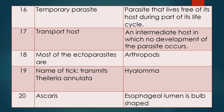Question nineteen: Name the tick which transmits Theileria annulata. Very common question. The answer is Hyalomma. Question twenty: In Ascaris, asking about the esophageal lumen and type — the esophageal lumen is bulb-shaped. That is Ascaris.